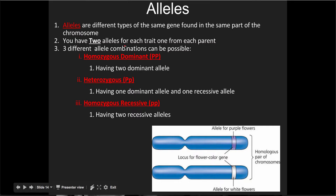A lot of what we look at is going to be simple heredity, but it has to deal with the idea of these things called alleles — some more vocabulary for you. An allele is a different type of the same gene. They're in the same part of the chromosome. For example, an allele for purple flowers and an allele for white flowers are found in the same spot on the same homologous pair of chromosomes. The gene is the same gene — for the color of the flower — but there are different versions of it. You have two alleles for each trait, one from each parent.